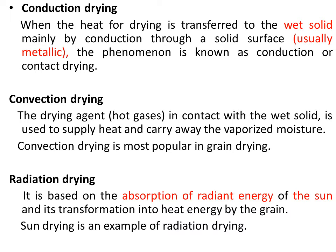The third is radiation drying. It is based on the absorption of radiant energy. For example, the Sun transforms its heat energy, which is absorbed by the grains, and due to this radiant energy the drying process is carried out.